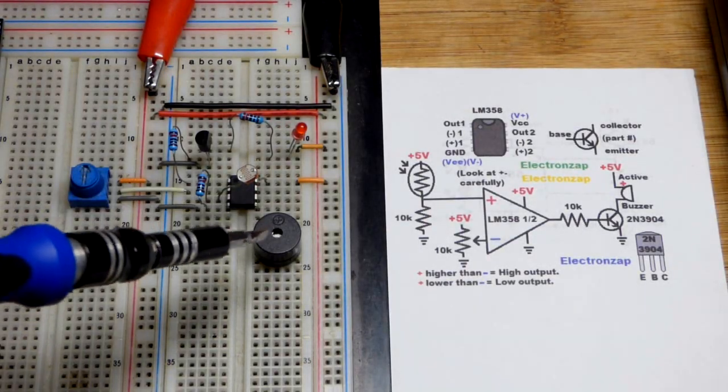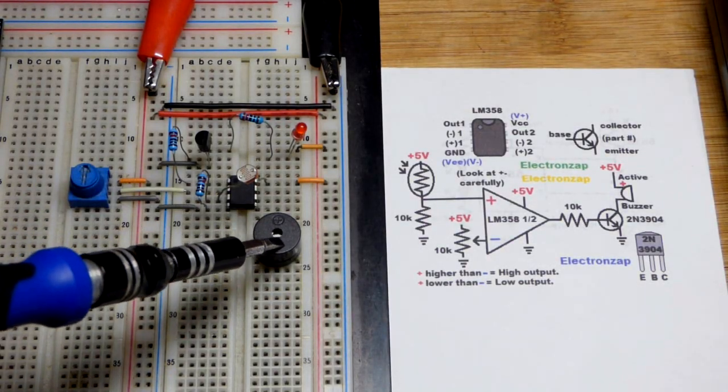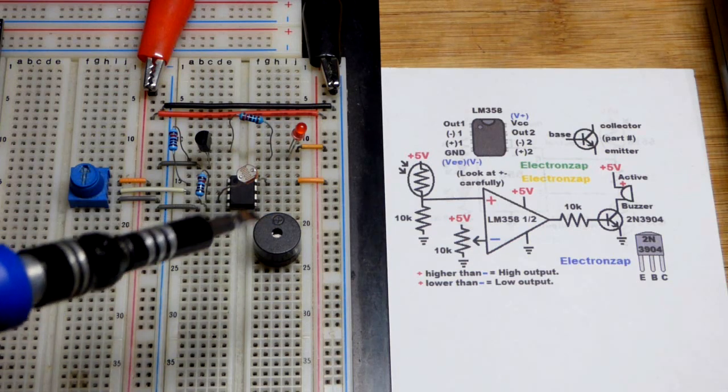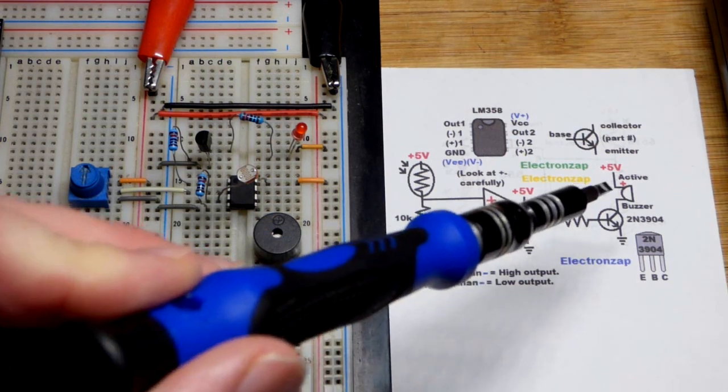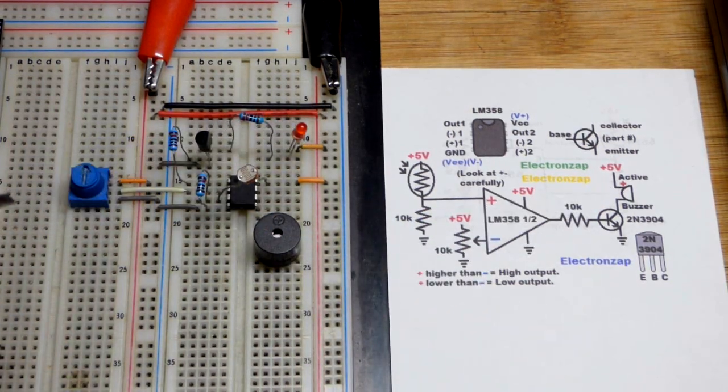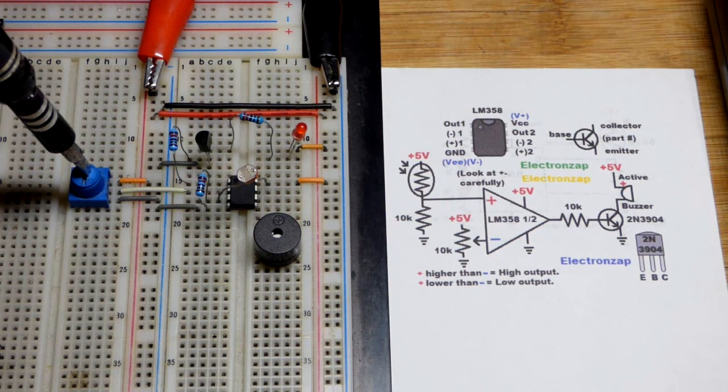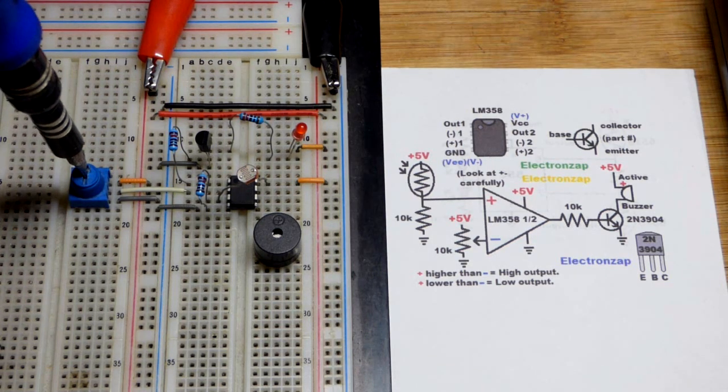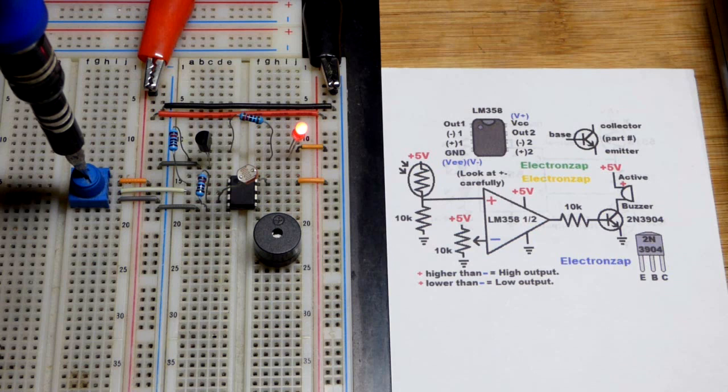In this video we're going to have an alarm that goes off when the light gets too bright. We're going to use the active buzzer to make the alarm, but to set the circuit we're going to use an LED because these buzzers are really loud.